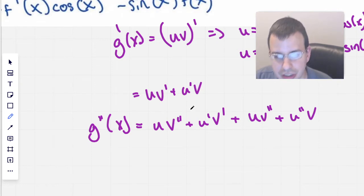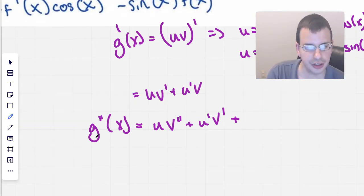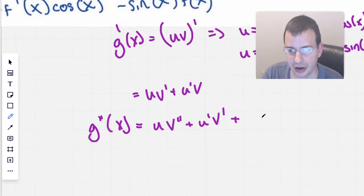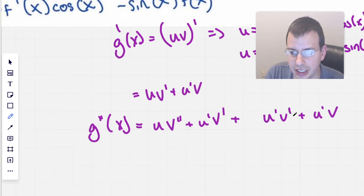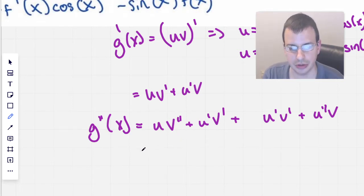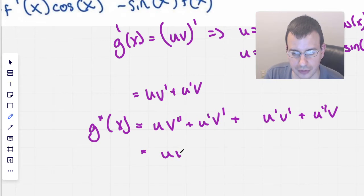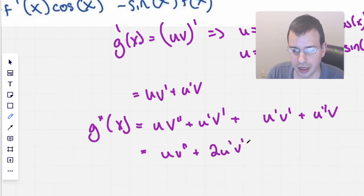So the second time we do this, for the second part, I'm just going to write this out as u prime v plus u prime v. Then I'm going to add a prime to the second part, and then I'm going to add a prime to the first part. So we have one double prime of u, and we have one double prime of v. So uv double prime plus u prime v prime. Let's say two of those.